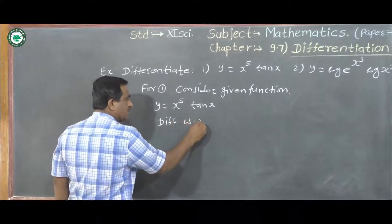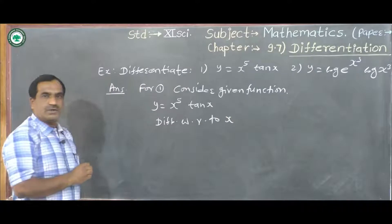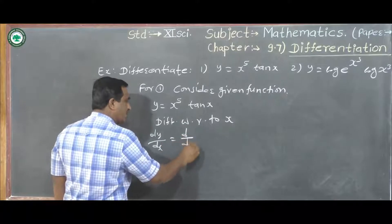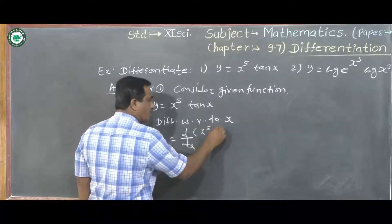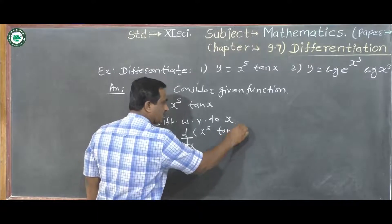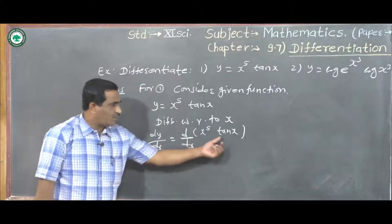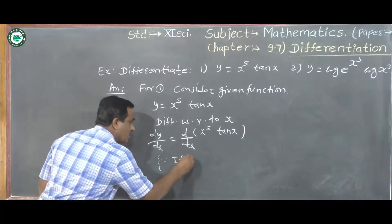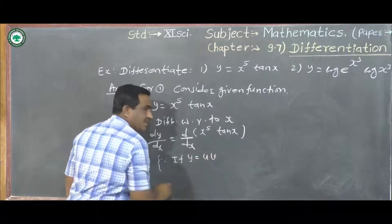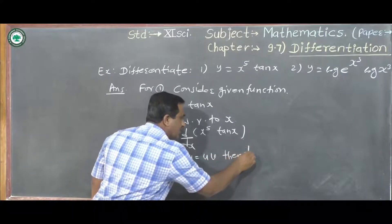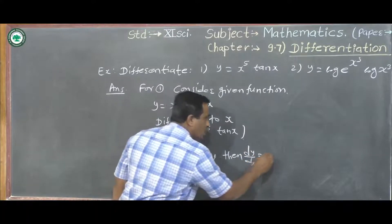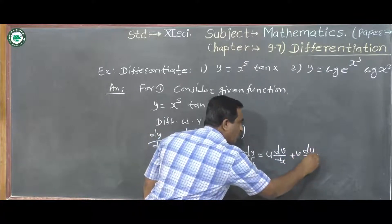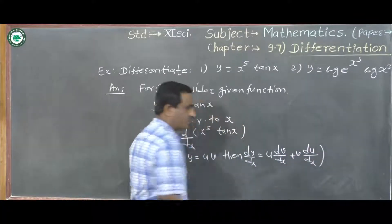Answer for the first example: consider the given function y = x⁵·tanx. In the RHS there is a product of two functions: first function is x⁵, second function is tanx. We call this u and this v, and use the product rule. Differentiating with respect to x: dy/dx = d/dx(x⁵·tanx). Since if y = u·v, then dy/dx = u·(dv/dx) + v·(du/dx).